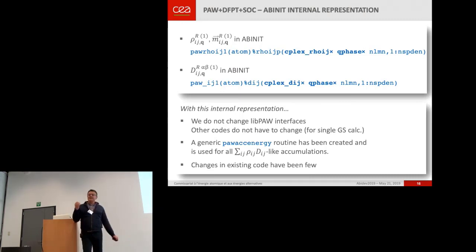My point was that the libPAW is now used by several codes. And I didn't want to change the API. So that's the reason why I didn't add an extra dimension to the array. But I multiplied it by two to have the complex.